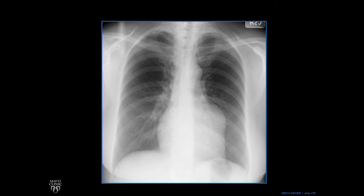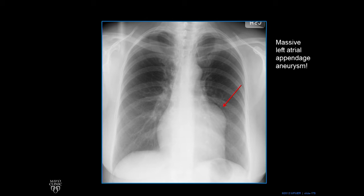Here's an abnormal radiograph. In the region of the left atrial appendage, we have a bulge. Again, that could be a mass or a lung cancer, but in this case it was a massive left atrial appendage aneurysm.